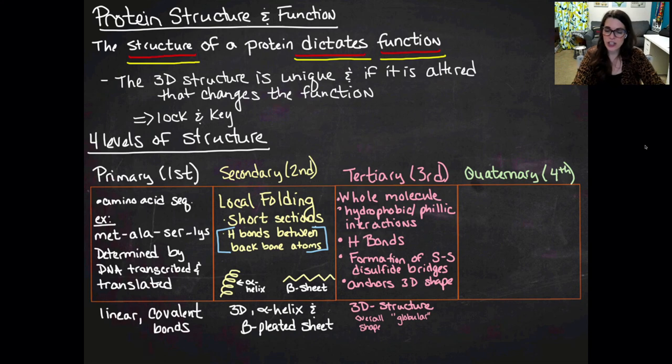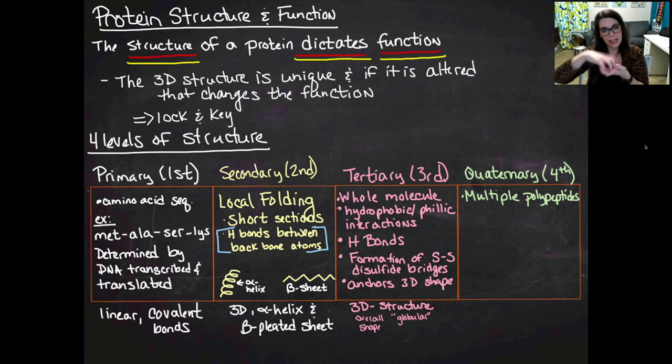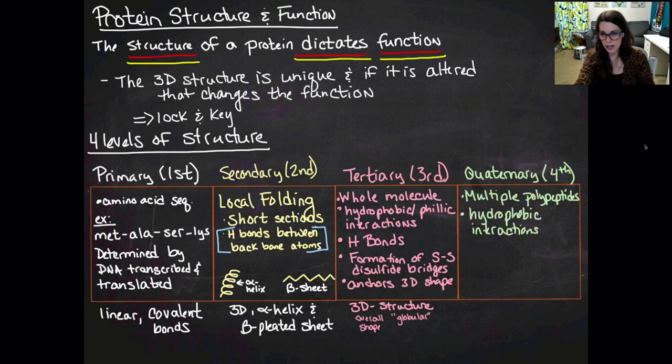And then quaternary structure, that's the fourth level, is when you have like multiple polypeptides like hanging out together. So like for example, hemoglobin is actually made up of four protein subunits. It has two alpha subunits and two beta subunits and all four of those subunits go hang out together to make the hemoglobin protein, which carries oxygen in your red blood cells. And it's based on hydrophobic interactions. So basically you want the proteins to go ahead and like if both of my palms are hydrophobic and they don't like water and I'm floating around in the cell, look, now I don't have to be around water. So that's all that means, hydrophobic interactions.